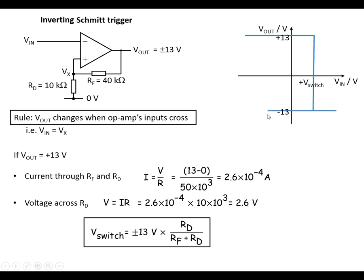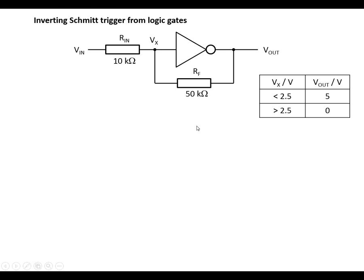Looking at the graph: V-out is positive when V-in is negative — this is the inverting characteristic. When we reach the positive switching voltage, the output rapidly drops to minus 13 volts and stays there as we reduce V-in. It stays at minus 13 volts until we reach the negative switching voltage, at which point the output suddenly switches to plus 13 volts.